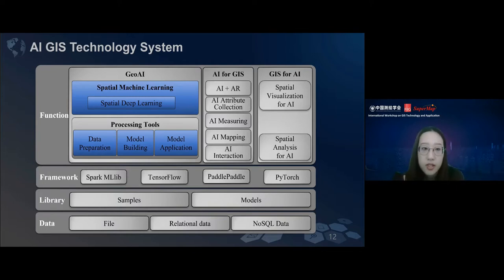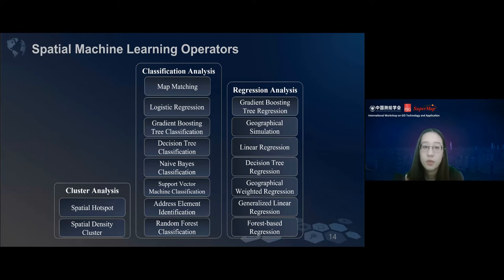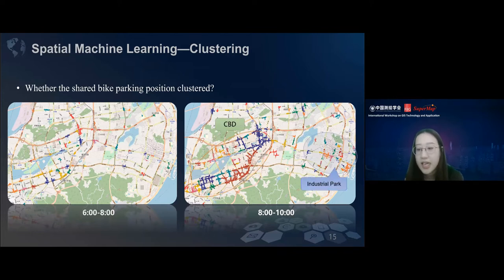Let's first focus on the GeoAI part at the function layer. We'll cover some spatial machine learning, spatial deep learning, and processing tools, which corresponds to the second and third part of my lecture. These are some spatial machine learning operators, or spatial machine learning algorithms that are usually used. We classify them based on the three main machine learning tasks. With the help of clustering, we can see whether the shared bike parking position is clustered. For example, at 6 to 8 AM, the bikes just parked randomly around the road. But at 8 to 10 AM, the bikes were gathered around the CBD and industrial park area. This analysis can be used to support effective allocation and management of the bicycles.